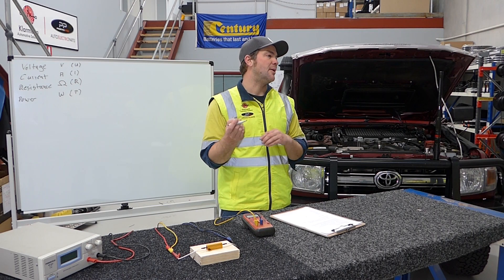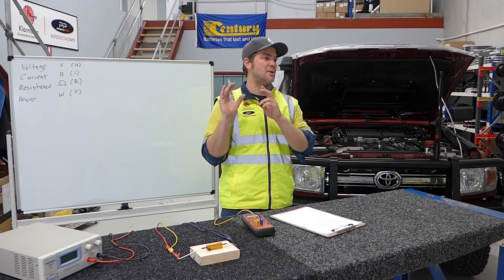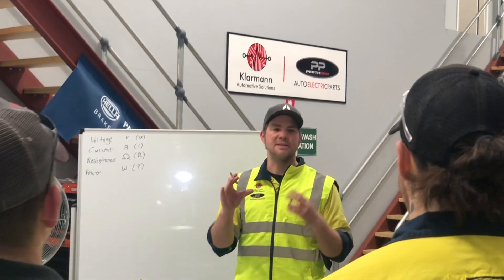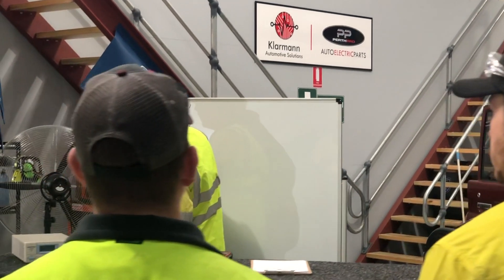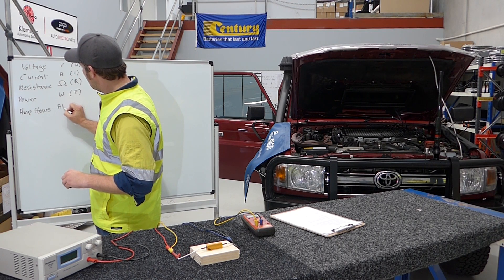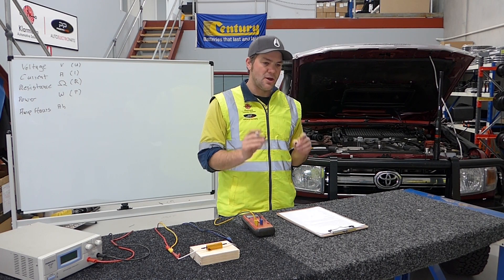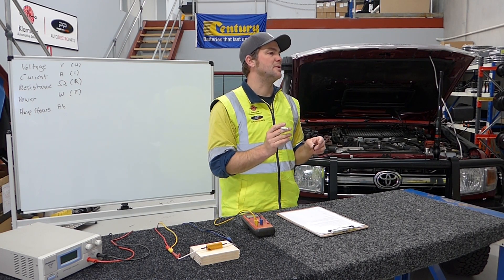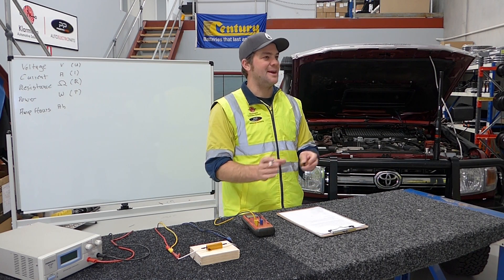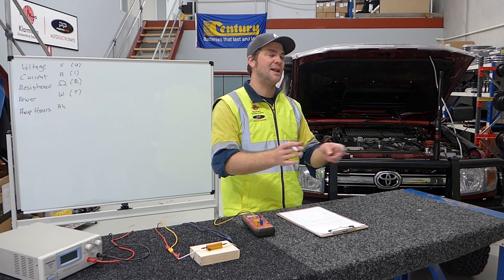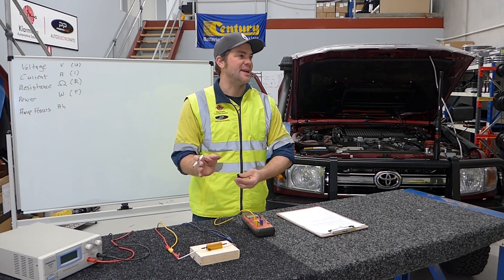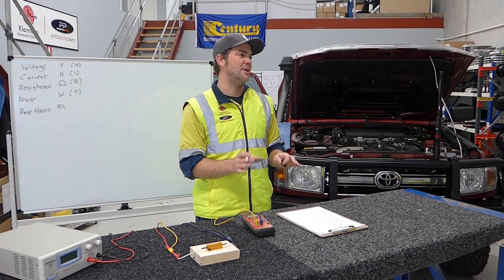The next important unit we always talk about is amp hours. That is usually when we talk about batteries. Amp hours are the amount of amps stored in a battery but it doesn't take into account any voltage. You find amp hours (AH) on batteries a lot — for example a 12 volt 100 amp hour lithium battery, a 24 volt 100 amp hour, or a 48 volt 100 amp hour. Amp hours only tell you how much amps you can get out; they don't tell you how much power is actually stored.